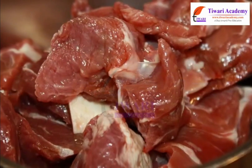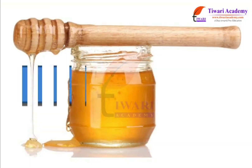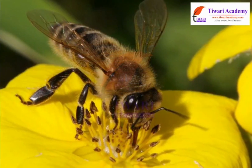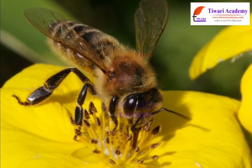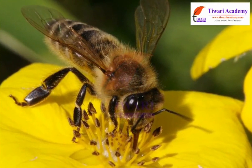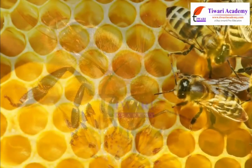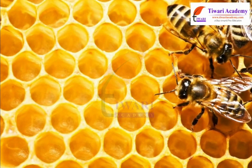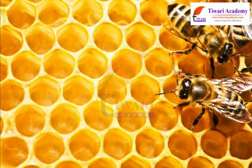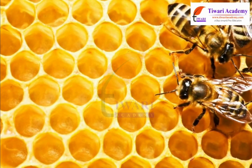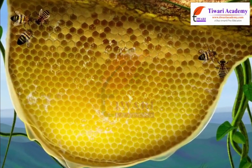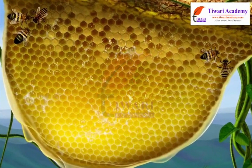Honey: Bees collect nectar — sweet juices from flowers — and convert it into honey, storing it in their hive for their use. We get the food stored by the bees as honey.